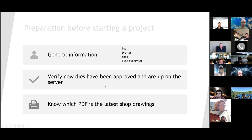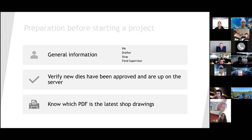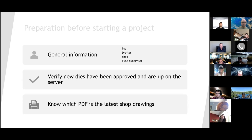The last preparation item is to know which PDF has the latest and greatest shop drawings. When we started about two years ago, we used profiles, but since then we've moved to using the latest and greatest shop drawings because sometimes details change and get updated. That way we do all the work and data entry with the latest details instead of something that could have changed. So always find what the latest and greatest shop drawings are.